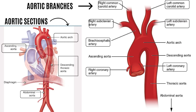Let us first start with the aorta. The aorta is the body's biggest artery. It transports blood that has been oxygenated to the rest of the body. The aorta emerges from the left ventricle's base through the aortic orifice.